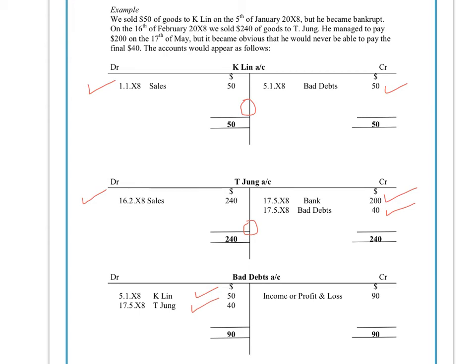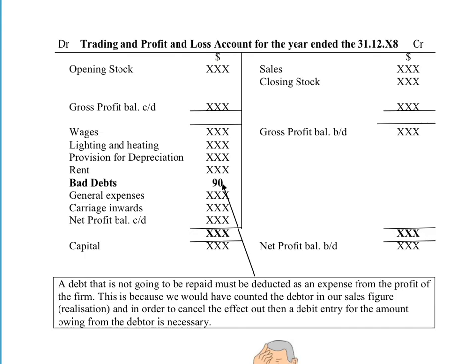The entry at the end of the year would be to credit our bad debts account and debit the profit and loss account in the income statement. Here we can see that in our trading and profit and loss account, specifically our profit and loss account, we would enter the bad debts as an expense of $90, and that would reduce our gross profit by $90.